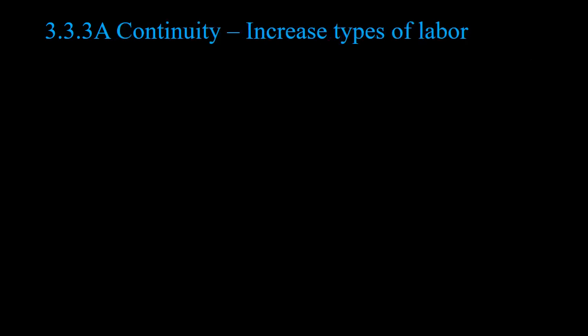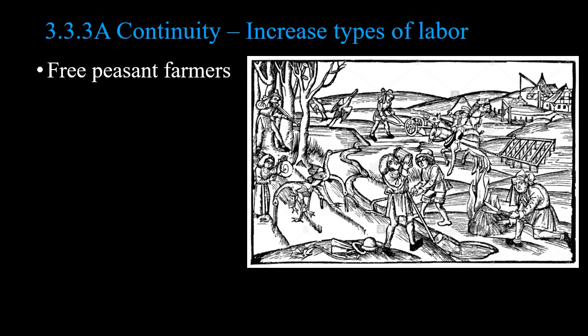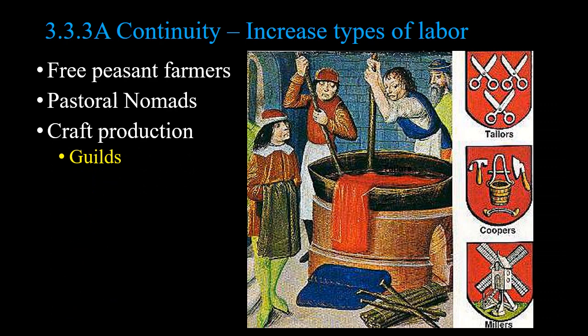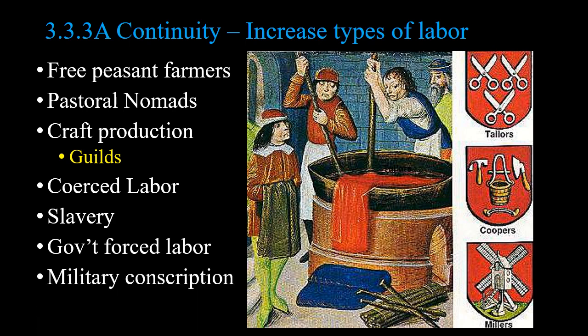Here's a continuity: increases in certain types of labor. Peasant farmers — both free ones and serfs. Pastoral nomads continue to produce animal goods. Craft production starts to increase through the use of guilds in Europe. Coerced labor is all over this time period — serfdom, slavery, government forced labor, military conscriptions. Coerced means forced — you don't have a choice. We'll see in Unit 4 it gets much more extreme with chattel slavery; we're not there yet.